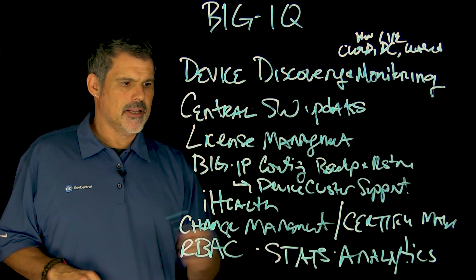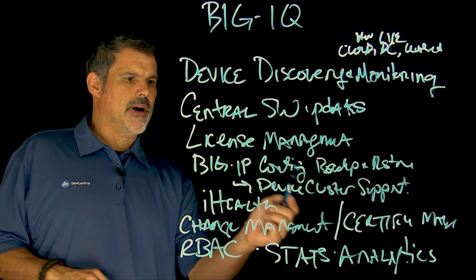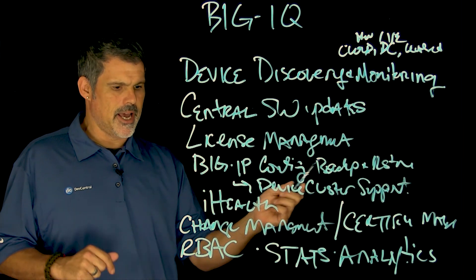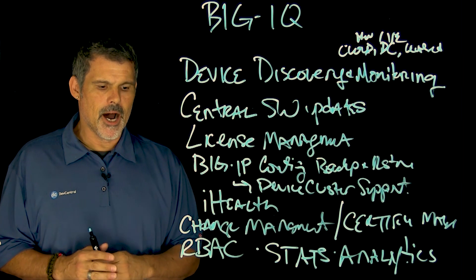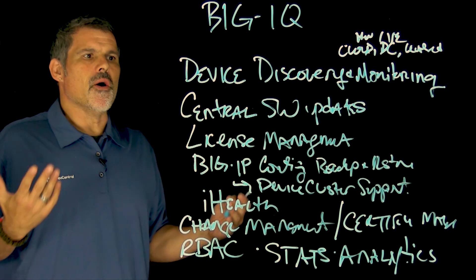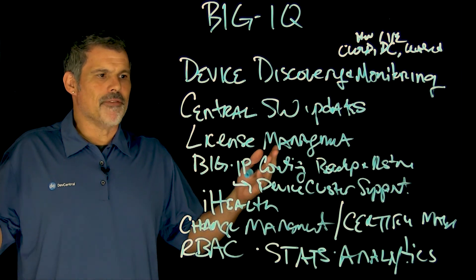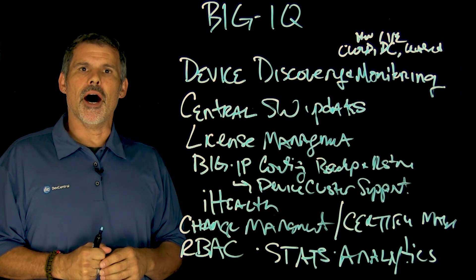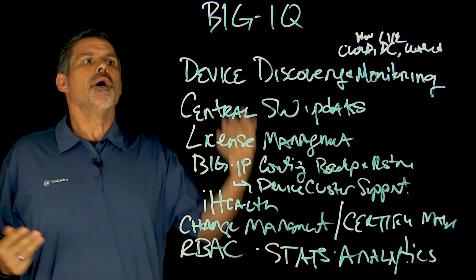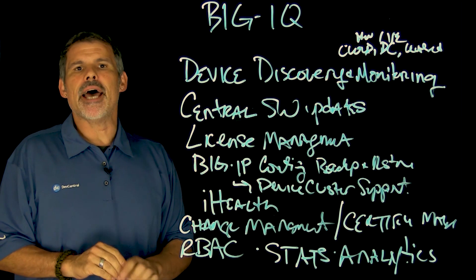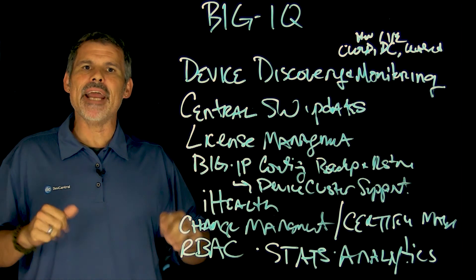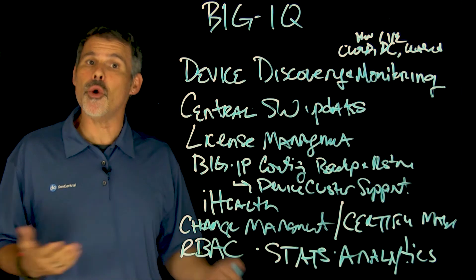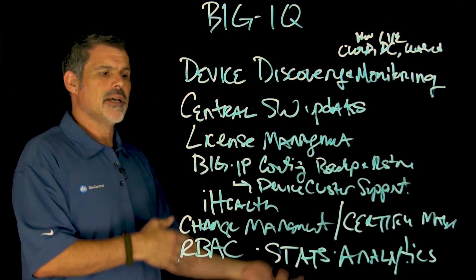So we got one, two, three, four, five, six, seven, eight, nine — I thought there was ten, maybe I'm forgetting one, but there you go. Almost ten things that you can do with Big IQ to help centrally manage and monitor your Big IP infrastructure, including things like licensing and analytics.